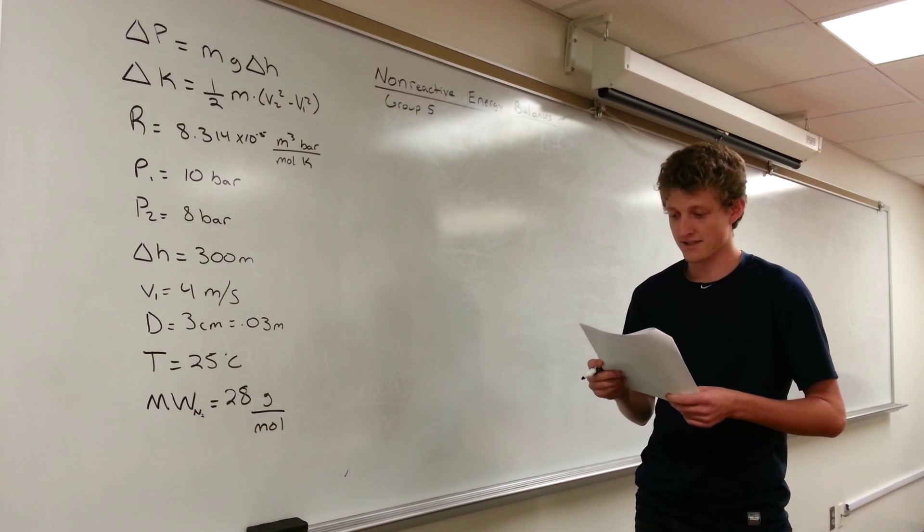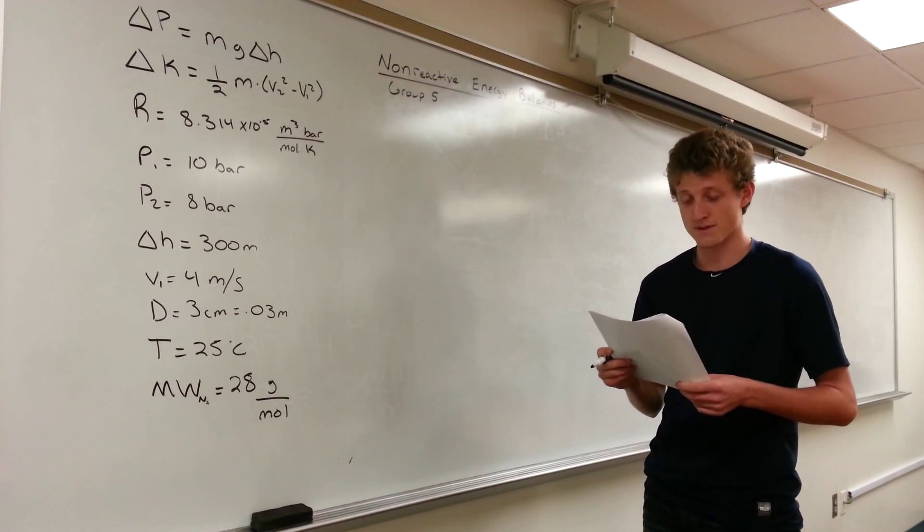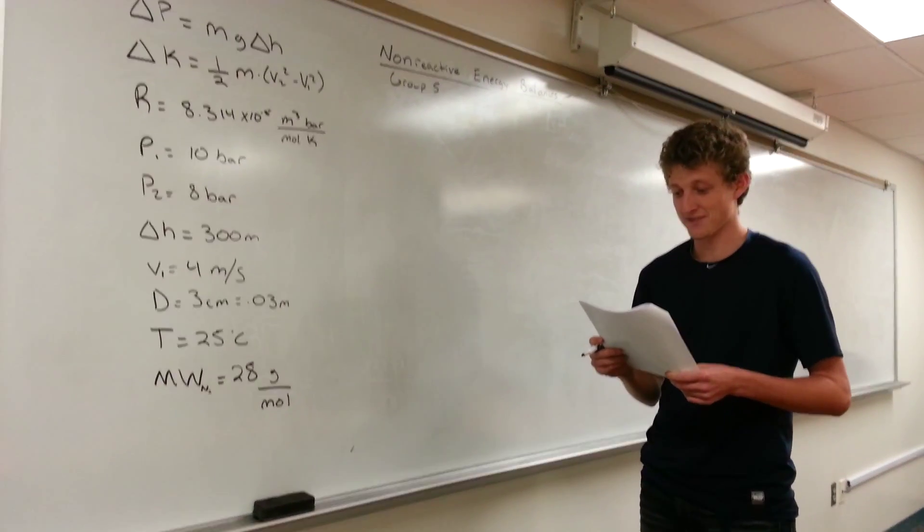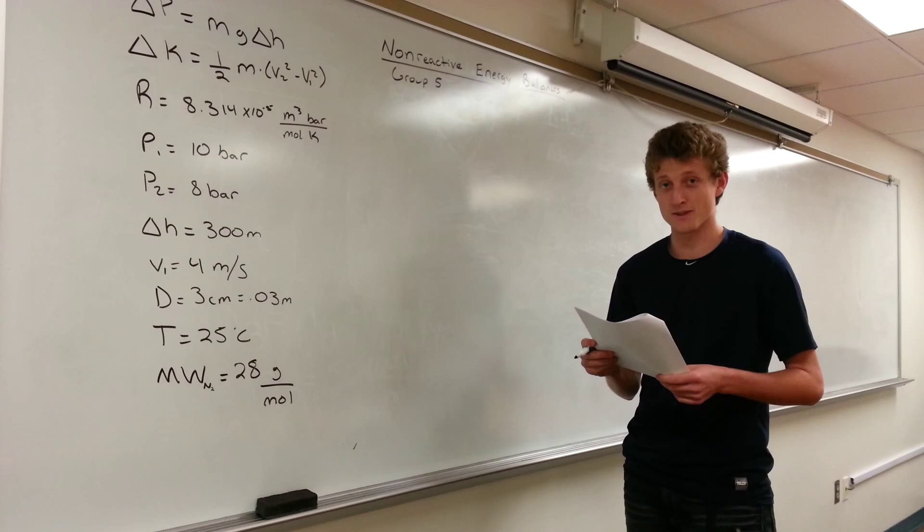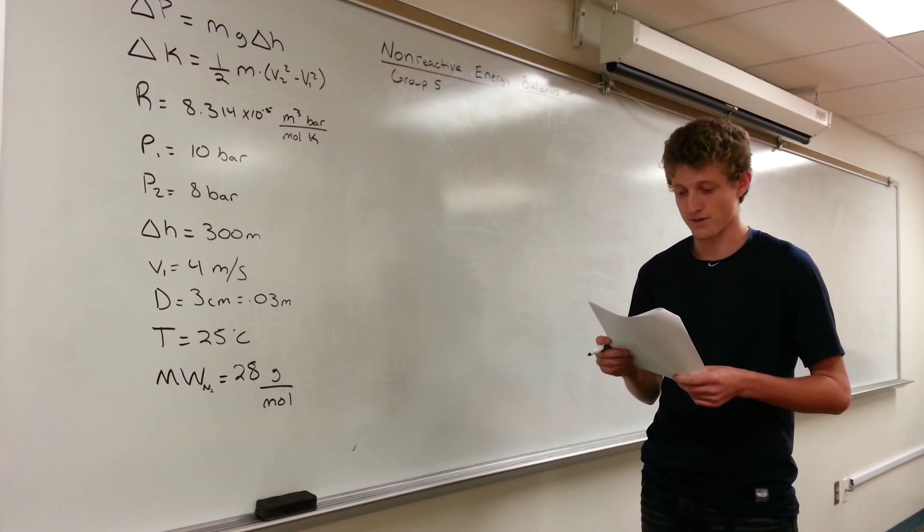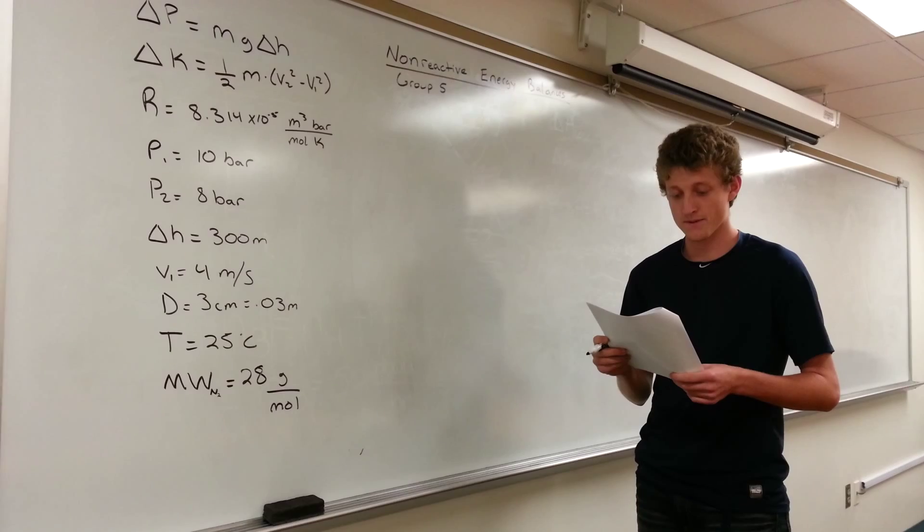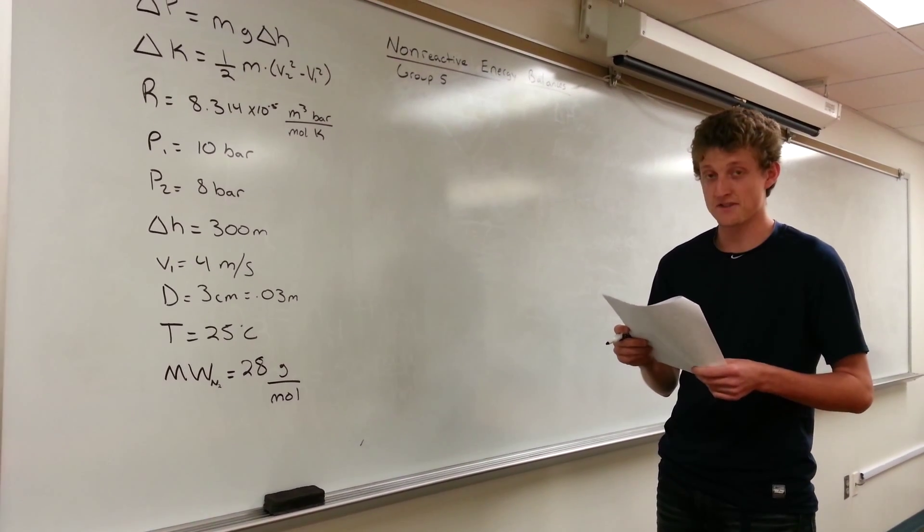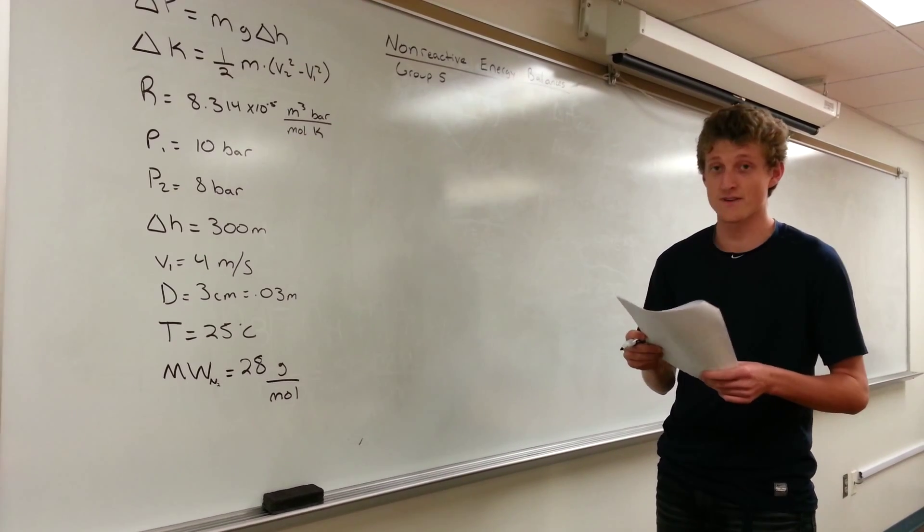The gas enters a 3 centimeter diameter pipe at 25 degrees Celsius and 10 bar. When the gas enters the pipe it is moving at an average velocity of 4 meters per second. When the nitrogen finally reaches the second storage tank, it emerges approximately 300 meters lower than the inlet point and it is at 8 bar. Determine the change in the potential and the change in the kinetic energy. Assume that nitrogen behaves as an ideal gas and use the following information.